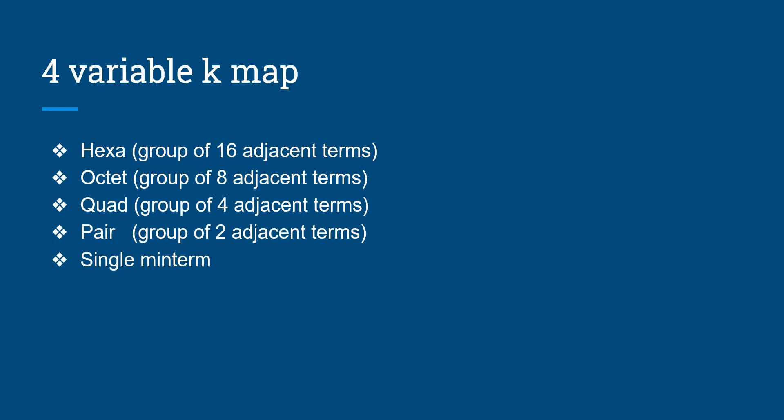Next coming to four variable K-map. Highest possible grouping is hexa, it is a group of 16 terms. Next is octet, it is a group of eight adjacent terms. Quad, it is a group of four adjacent terms. Pair, it is a group of two adjacent terms. Single minterm.